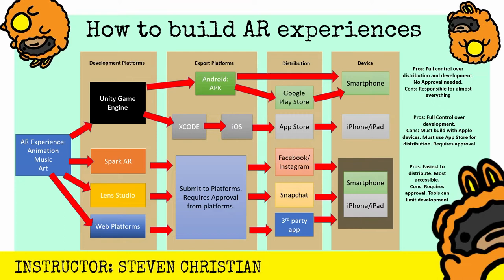When talking about distribution — you have your experience built and you're trying to share it with people. With Android, you can bypass distribution and go straight to the device, or submit to the Google Play Store. For iOS, the only way to distribute is through the App Store. With Spark AR, you get approval and experience it on Facebook and Instagram. With Lens Studio, you get approval and experience it on Snapchat. With web platforms, you get approval and have it on their third-party applications.